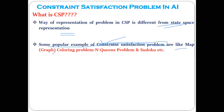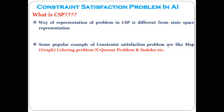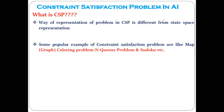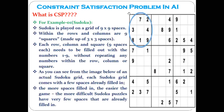Here I have mentioned some popular examples related to the constraint satisfaction problem. One popular example is the graph coloring problem. Another important example is the N-Queens problem, which also comes under the category of CSP. And another popular one is Sudoku, which also comes under the constraint satisfaction problem approach. We are going to discuss all these examples.